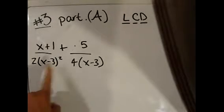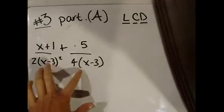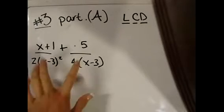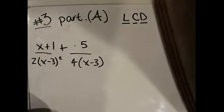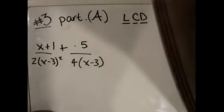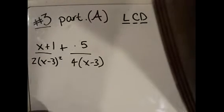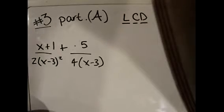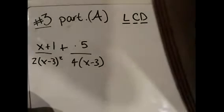These two terms — the least common denominator is a number that both of these terms can go into. If nothing is in common, you take all. If something is in common, take the higher power.